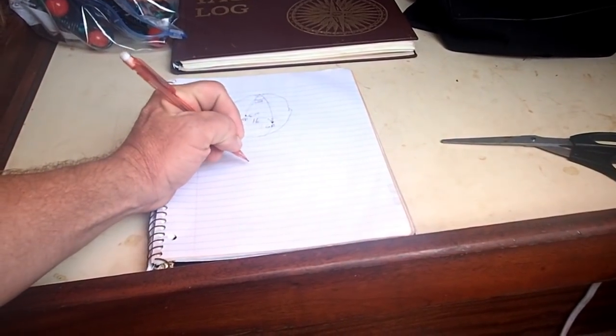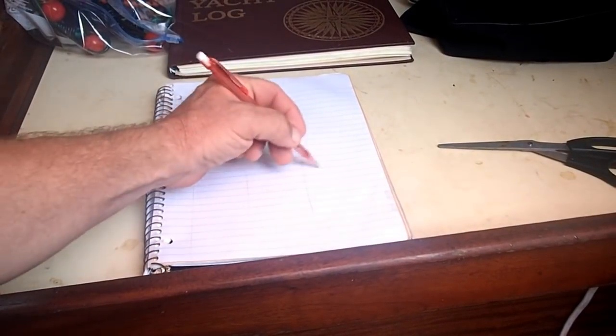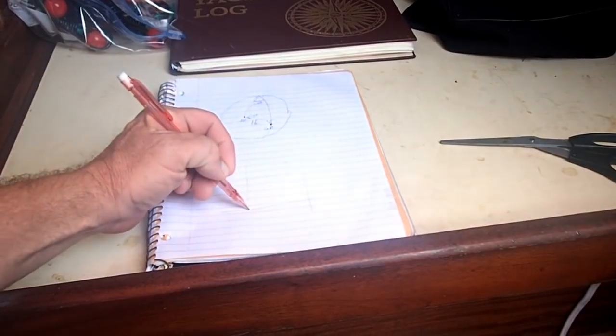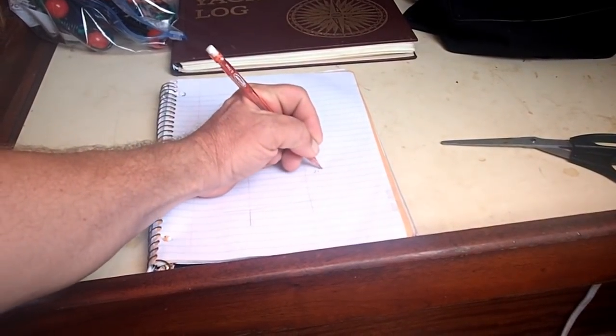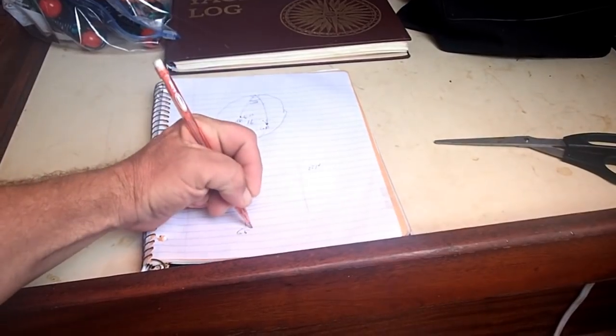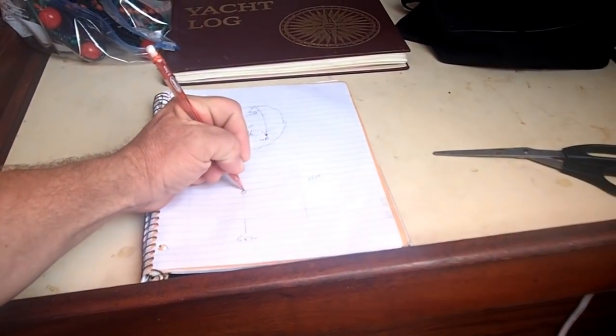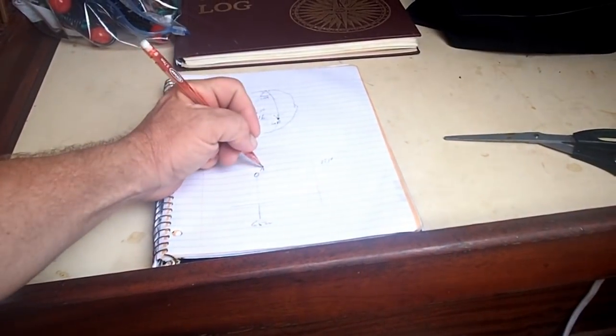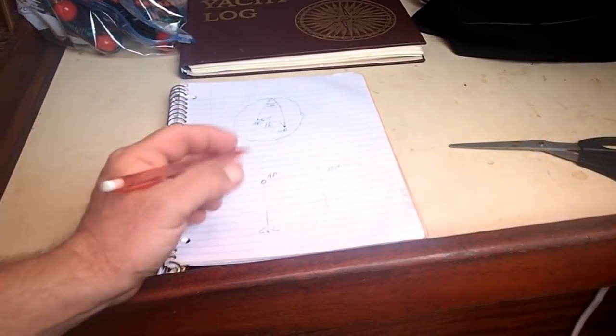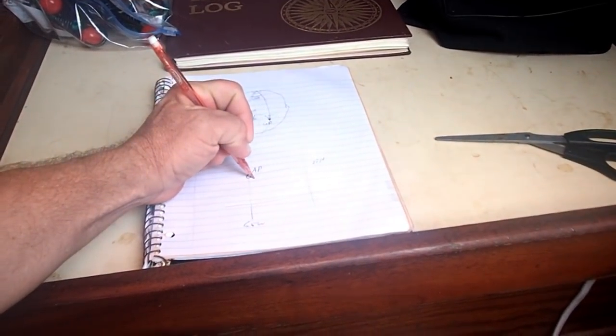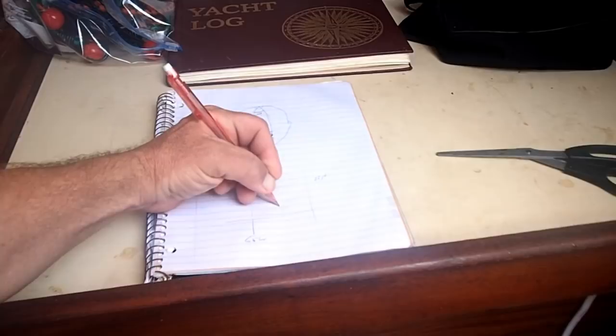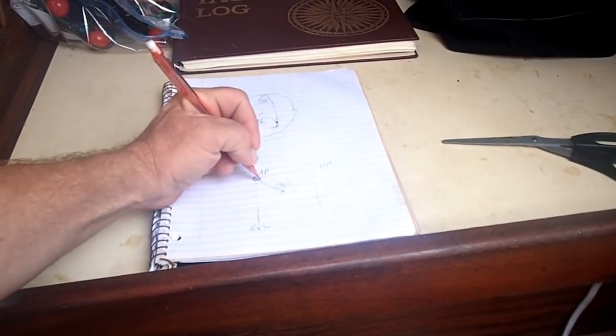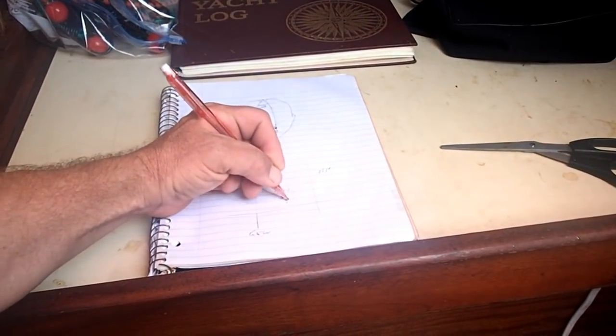Then what we do is we go onto a flat plotting sheet of just Latin lawn lines, and we plot our assumed position, so this is 25 north, 65 west. So our assumed position is right here, and we've computed that the sun is, say, a direction of 140 from where we are, so this is to sun.